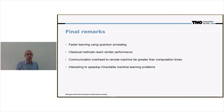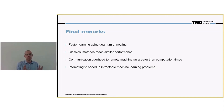The quantum approach offers a speed-up, but it's a constant speed-up, and that is what we saw in the previous plots. So using the quantum approach, you do learn much faster, but the classical approach, given enough training iterations, will attain similar fidelities.